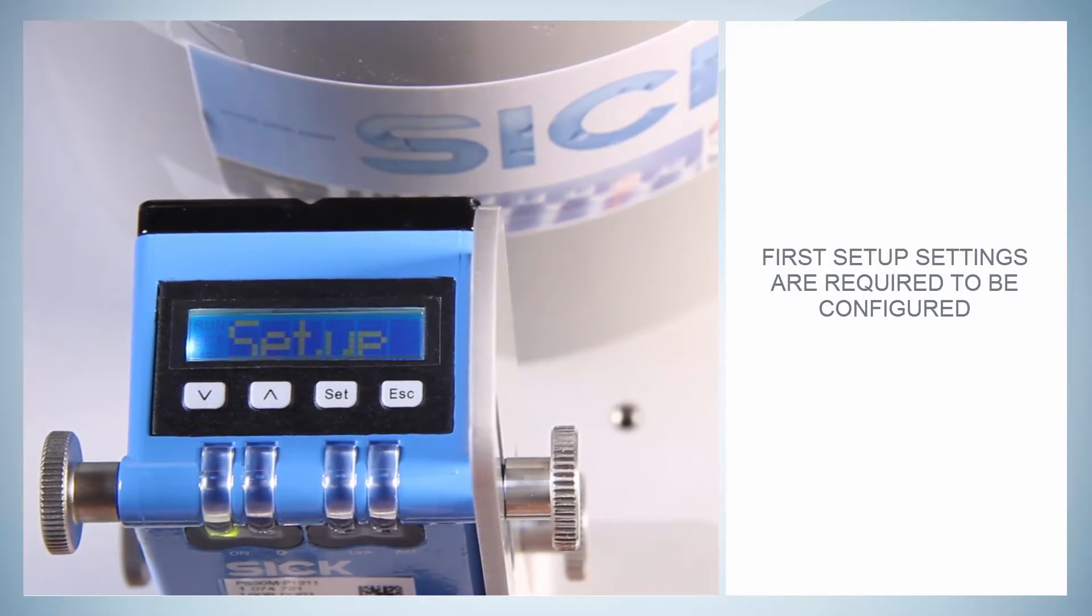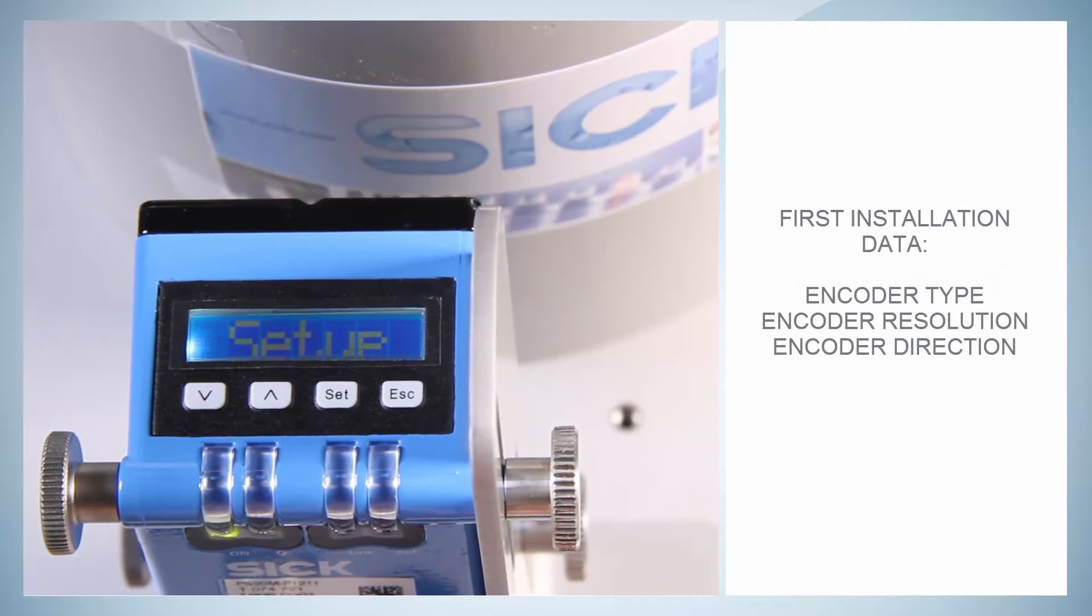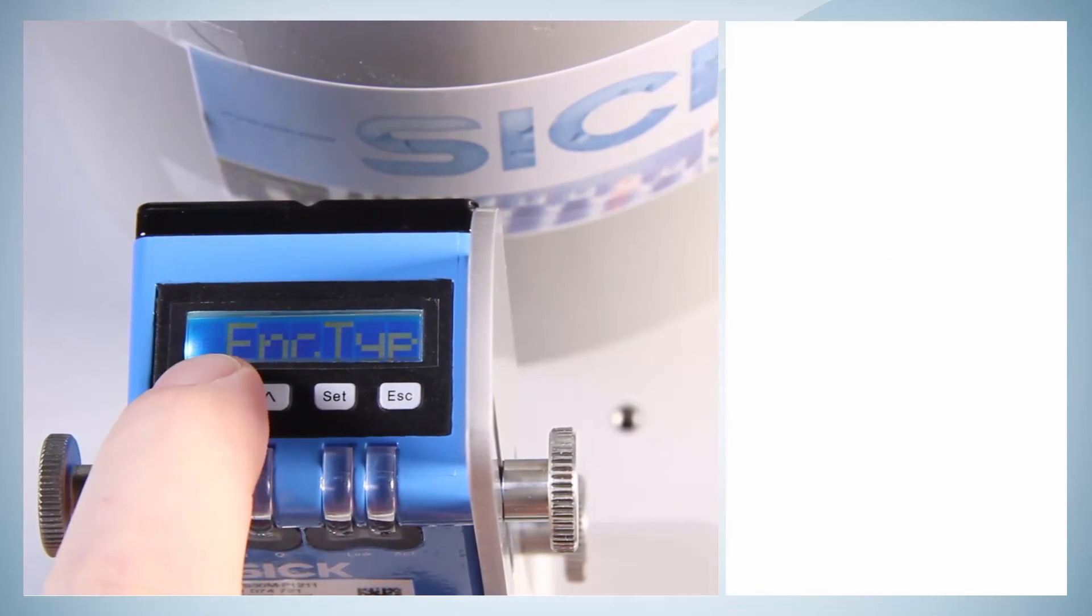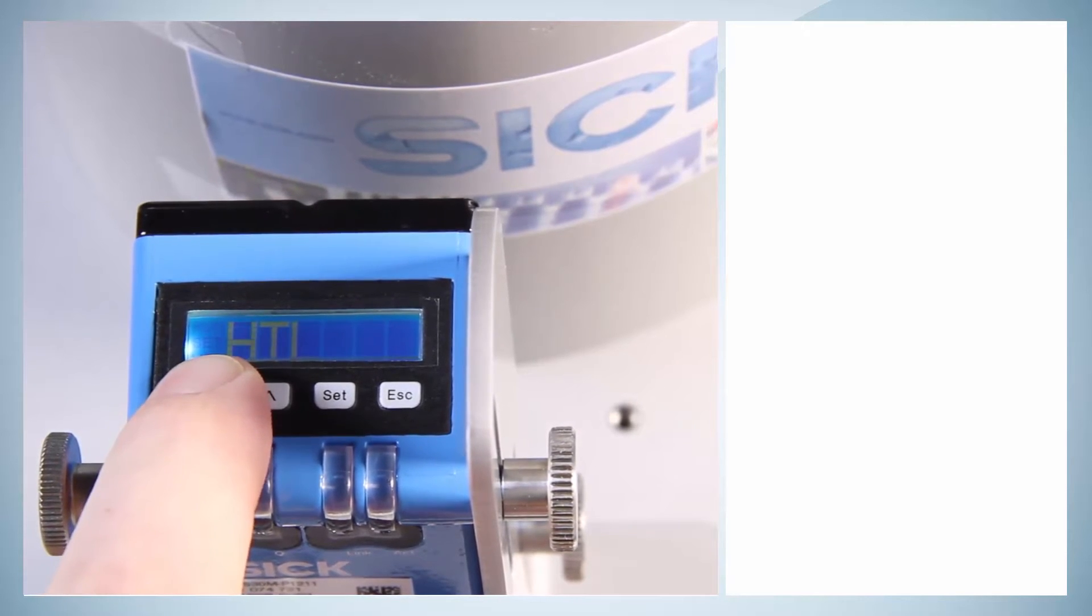The requested first installation data is the encoder type, the encoder resolution, as well as the encoder direction. With the encoder type, one can distinguish between a TTL or HTL encoder output signal.